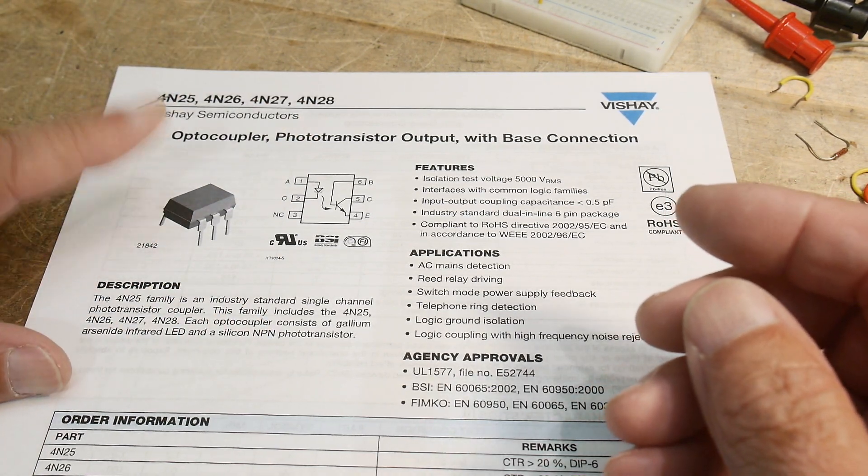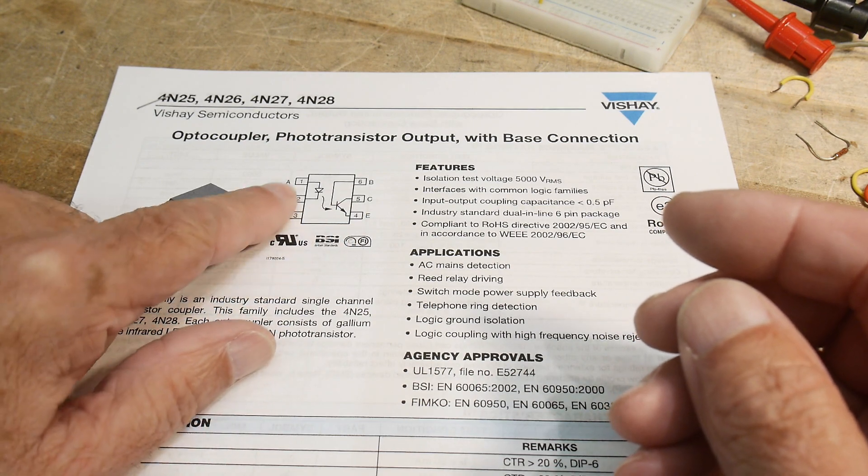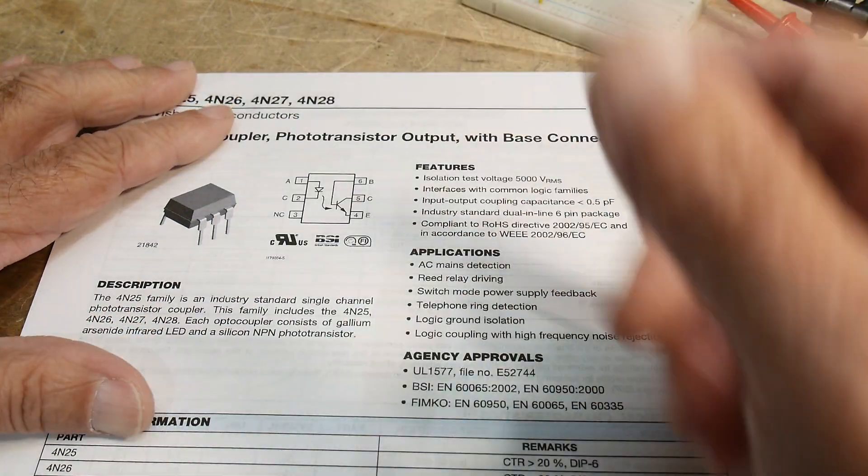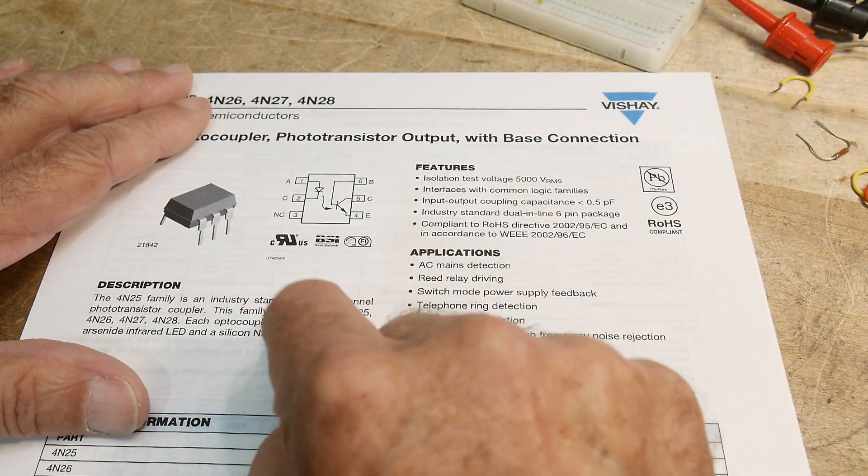4N28 is this optocoupler, a very, very old one, and has a six-pin dip, which is fun. There are only six pins instead of eight. You usually see eight-pin little dips, right? This is a six-pin, and it's a typical optocoupler.